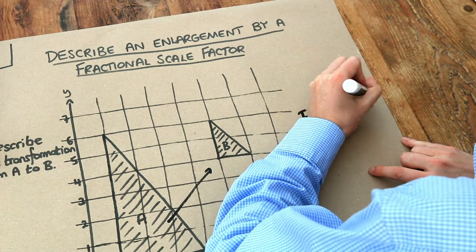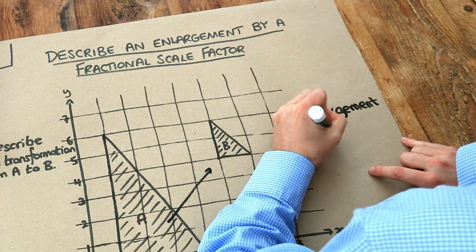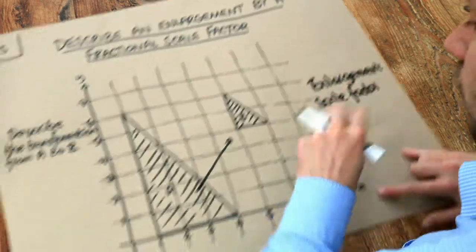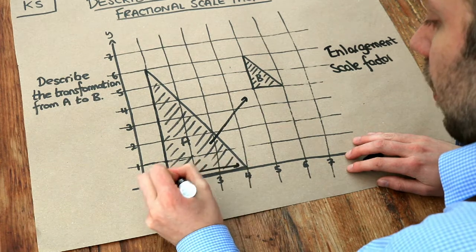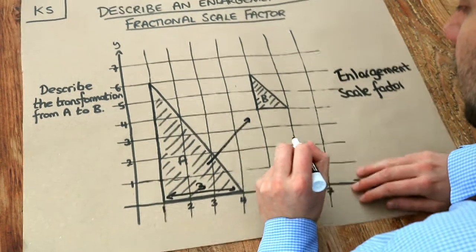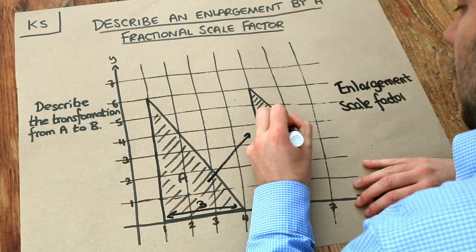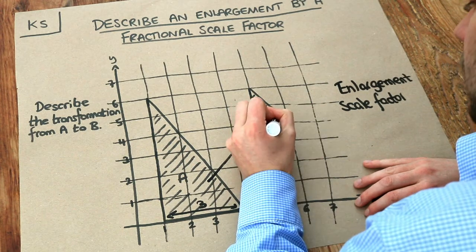And let's identify the scale factor. Now what I did before was to look at the width of each of these. So this width here, the original shape is three units, three squares. And this width is one square, one unit.